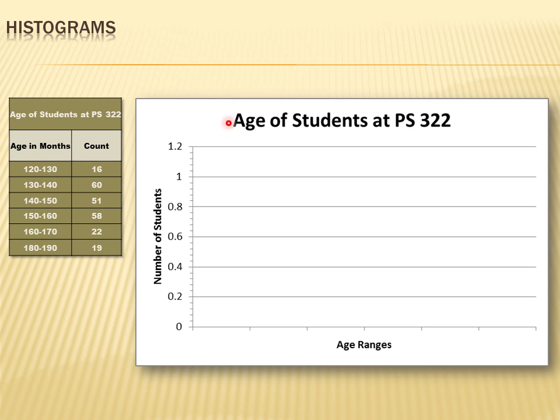And I've also labeled the whole chart age of students at public school 322. And that's kind of important, because you want this chart or this histogram to be self-explanatory. You want someone to be able to look at this and say, oh, I know what that chart's telling me. So it's important to label the chart.